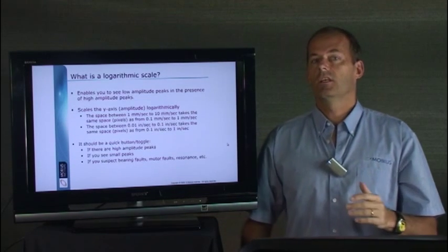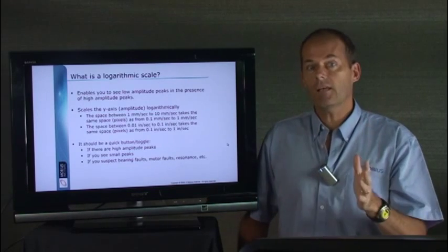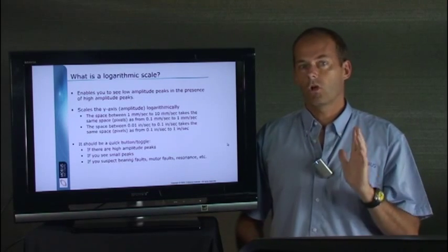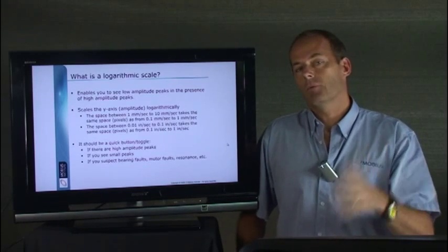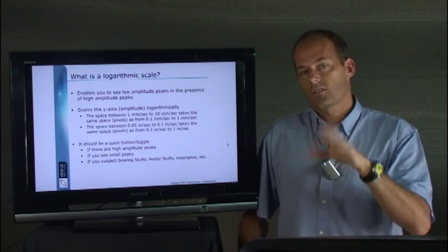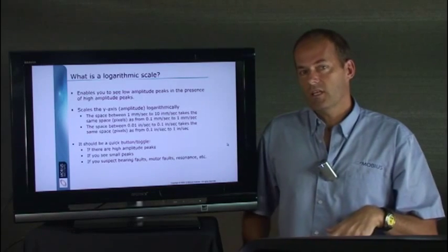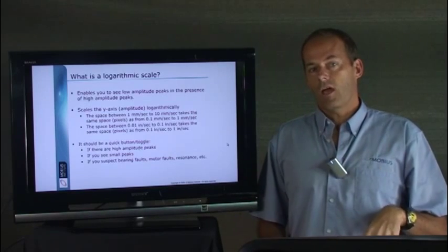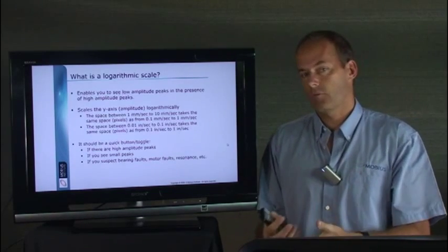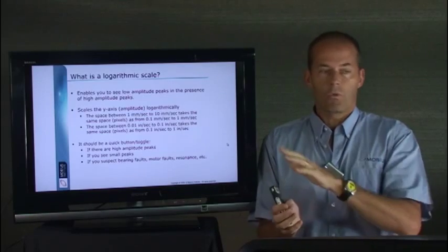There should be a toggle button in your software that just lets you press a button and it'll toggle the graph to log. It might toggle it to dB, and I'll explain that in just a second, and then it'll toggle it back to linear. So just in certain situations where you suspect bearing faults, where you suspect faults with the motor, where you suspect that there may be resonance causing peaks to be amplified and other situations, it's useful to do it. Now, what I hope you just realized is that couldn't those situations exist just about all the time? Yeah, exactly.